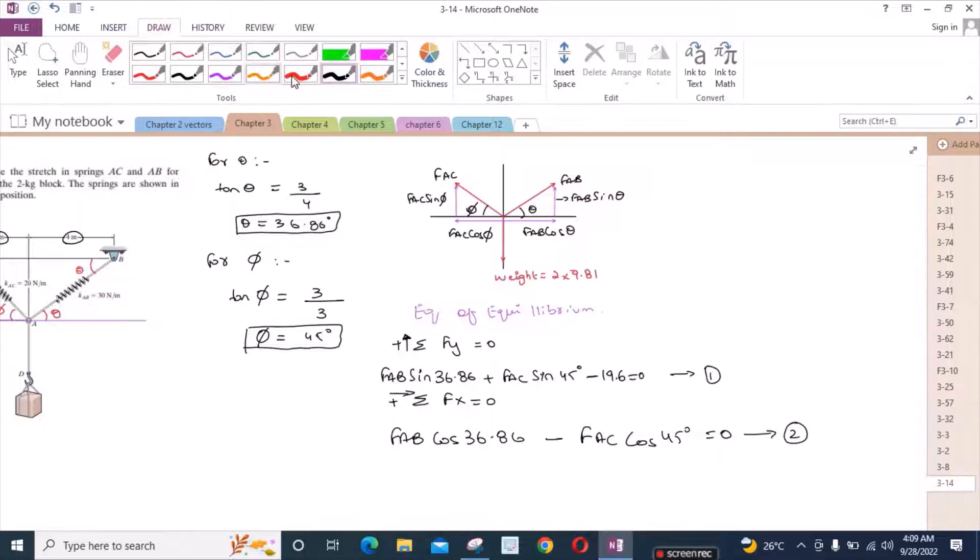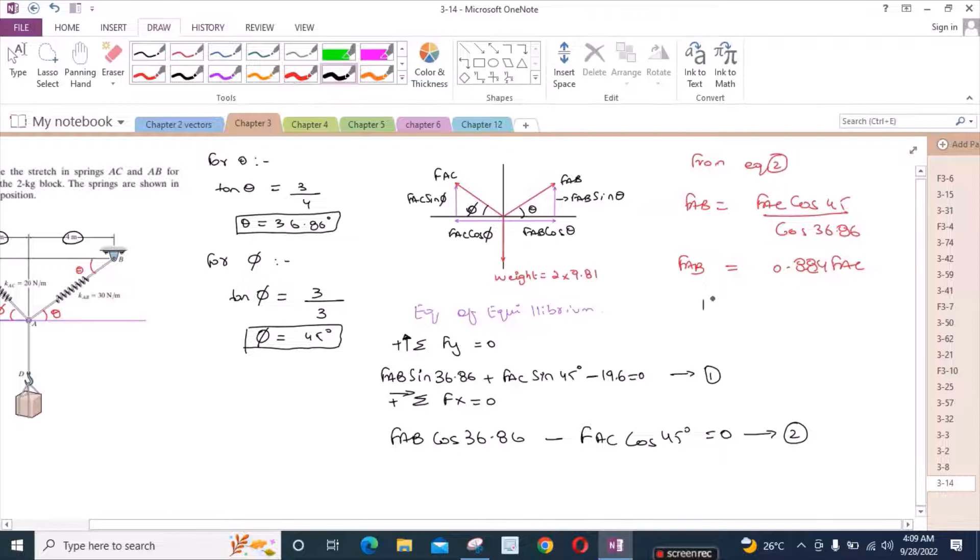Now from equation 2, I can make FAB as the subject. So FAB is equal to FAC into cos 45 divided by cos 36.86 degrees, which in terms is equal to 0.884 FAC. Now if we put it into equation 1...